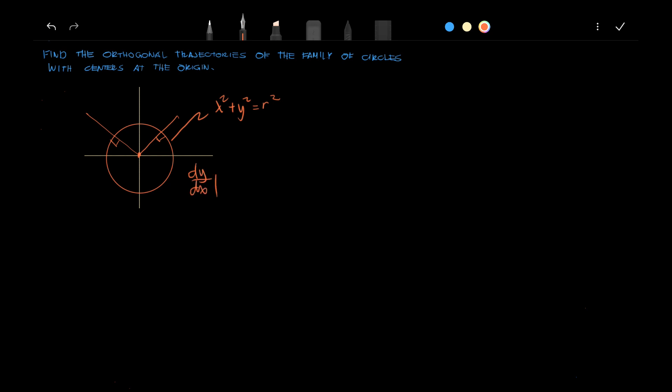We'll just differentiate this and get 2x plus 2y dy over dx equals 0. This is the slope of the tangent, and we'll apply the definition that the slope of the tangent equals the negative reciprocal of the slope of the normal.